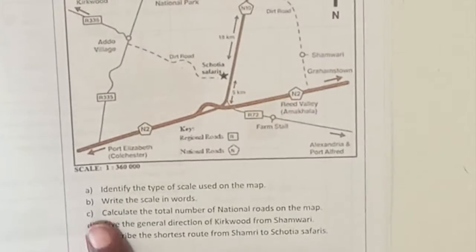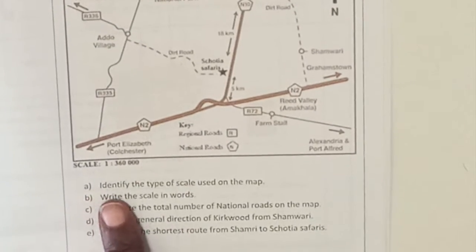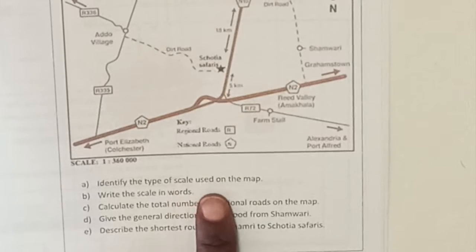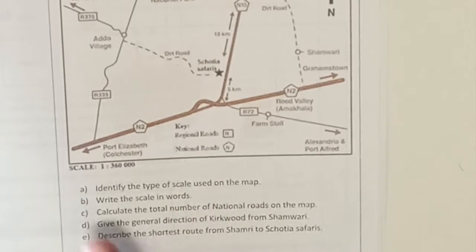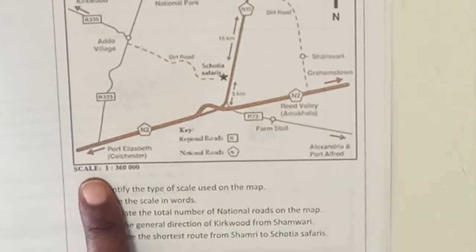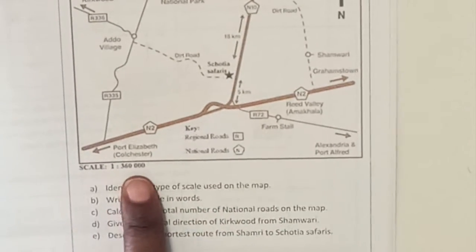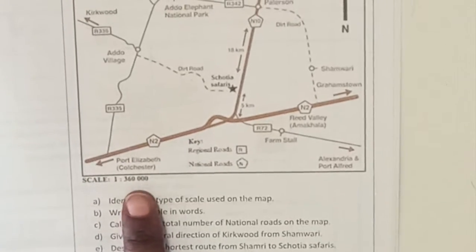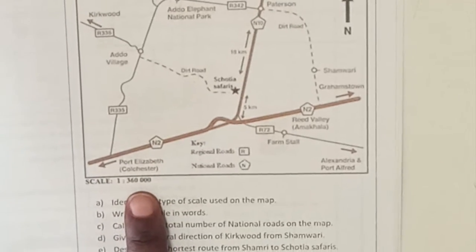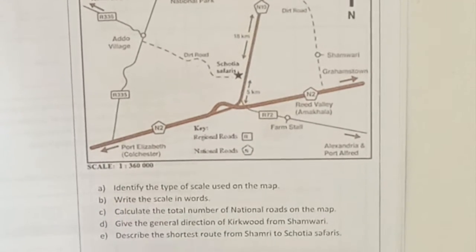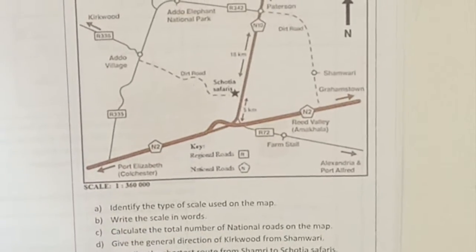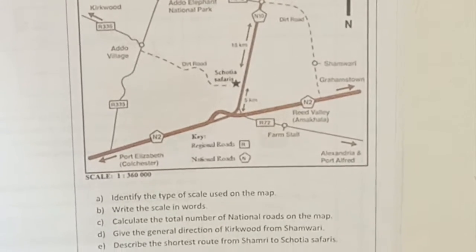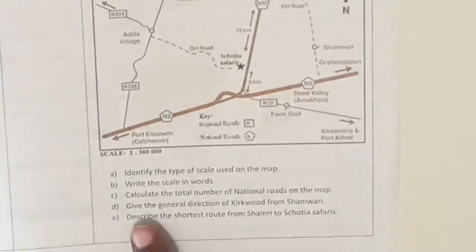Question A says: identify the type of scale used on the map. Looking at the scale given — 1 to 360,000 — this is a number scale. Go to your answer sheet and write: number scale.